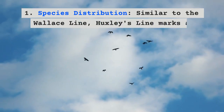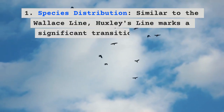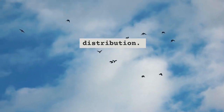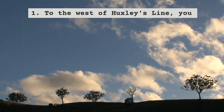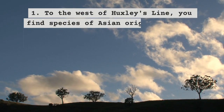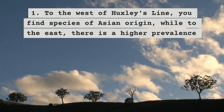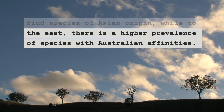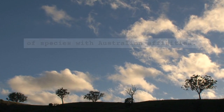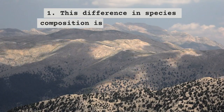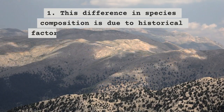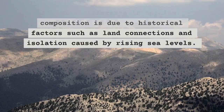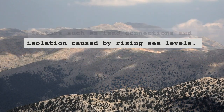Similar to the Wallace Line, Huxley's Line marks a significant transition in species distribution. To the west of Huxley's Line, you find species of Asian origin, while to the east there is a higher prevalence of species with Australian affinities. This difference in species composition is due to historical factors such as land connections and isolation caused by rising sea levels.